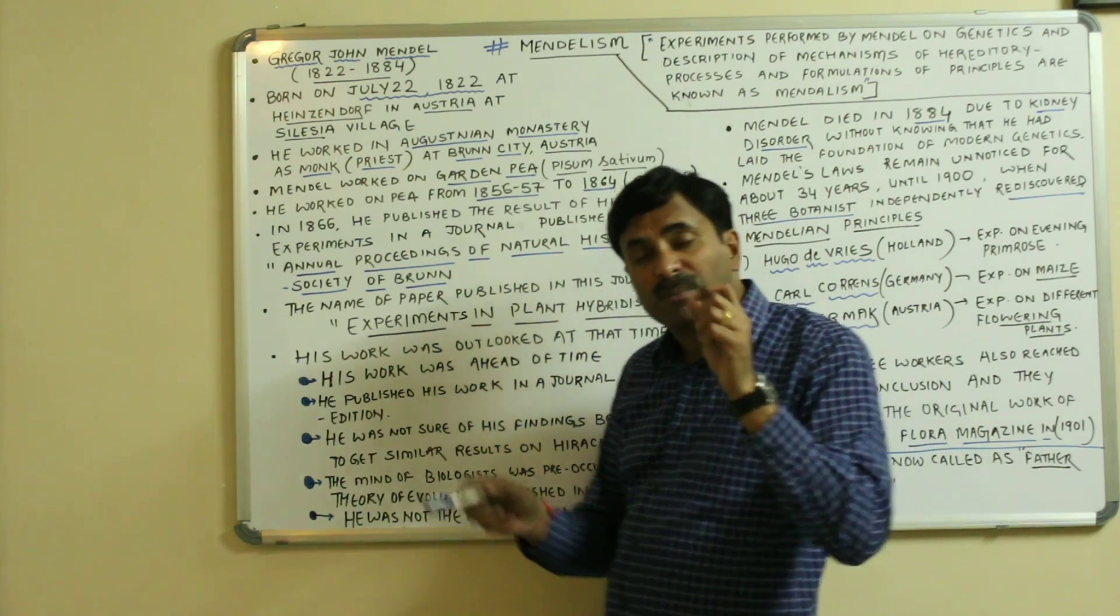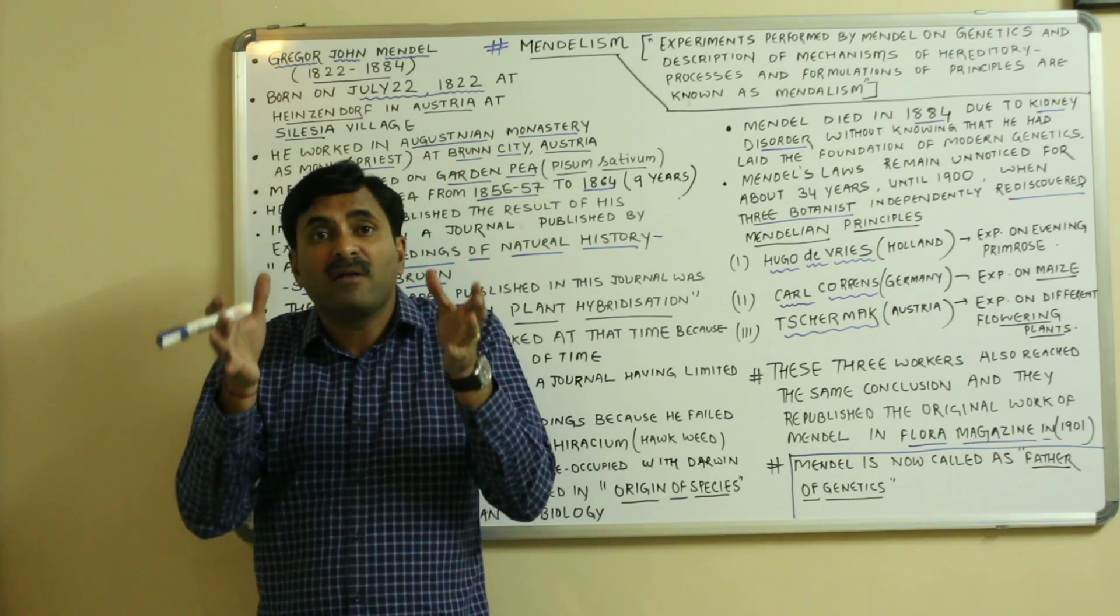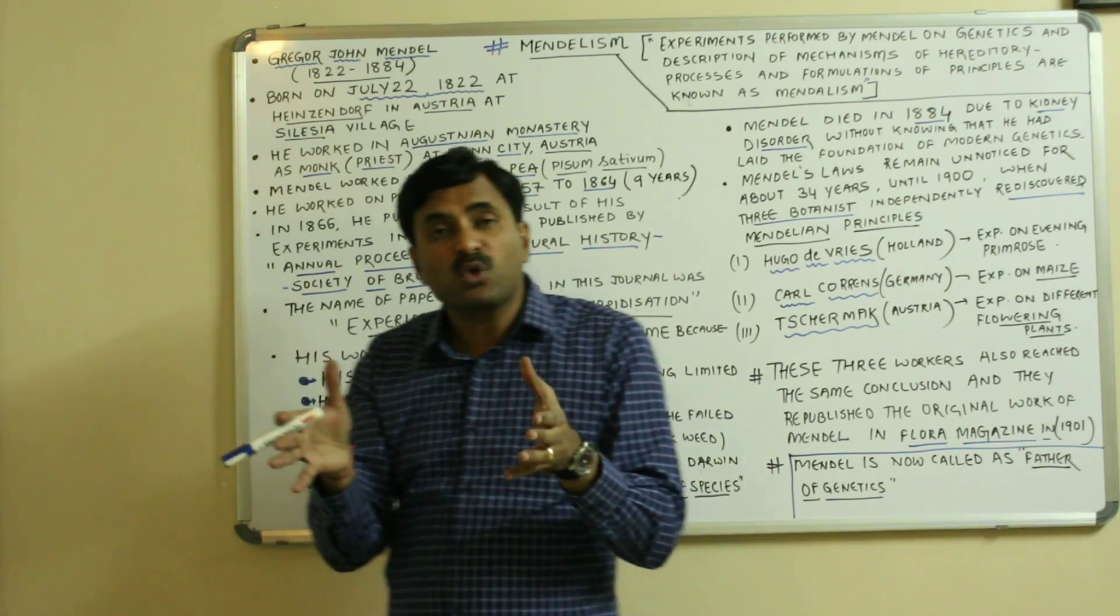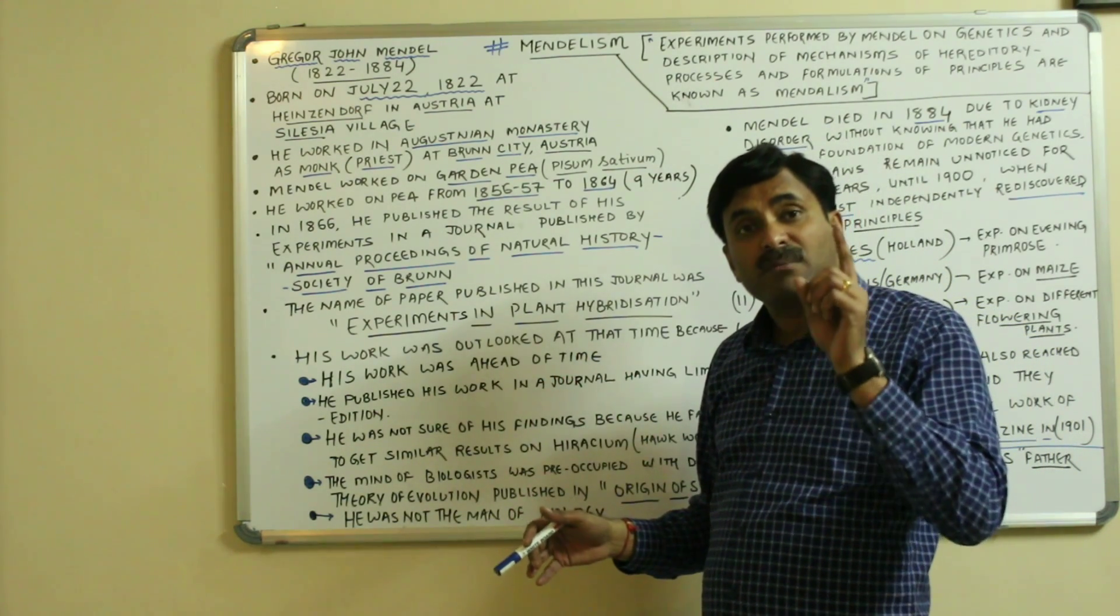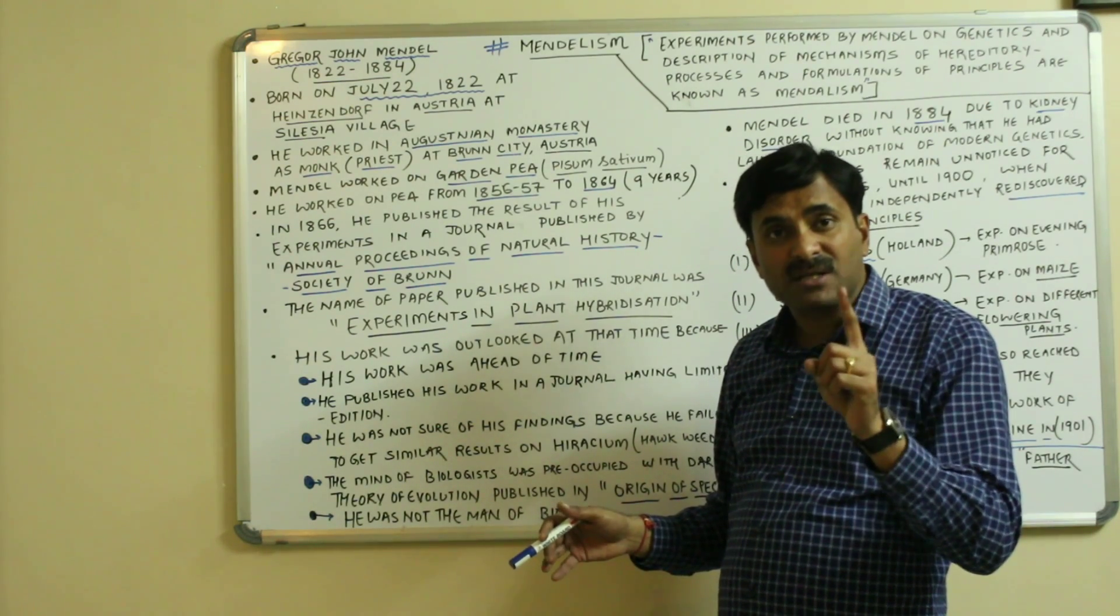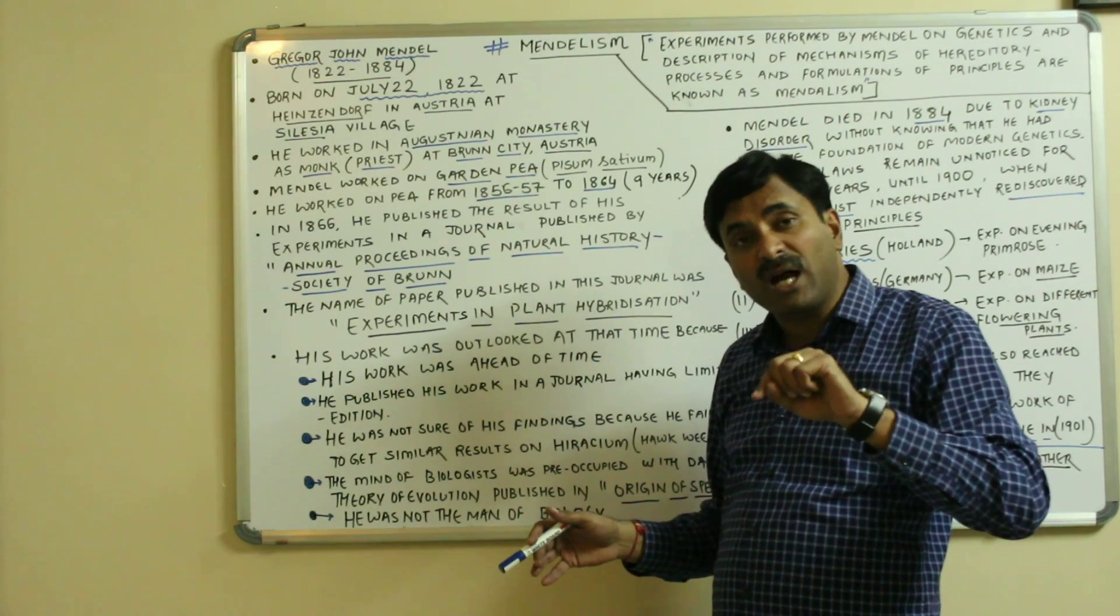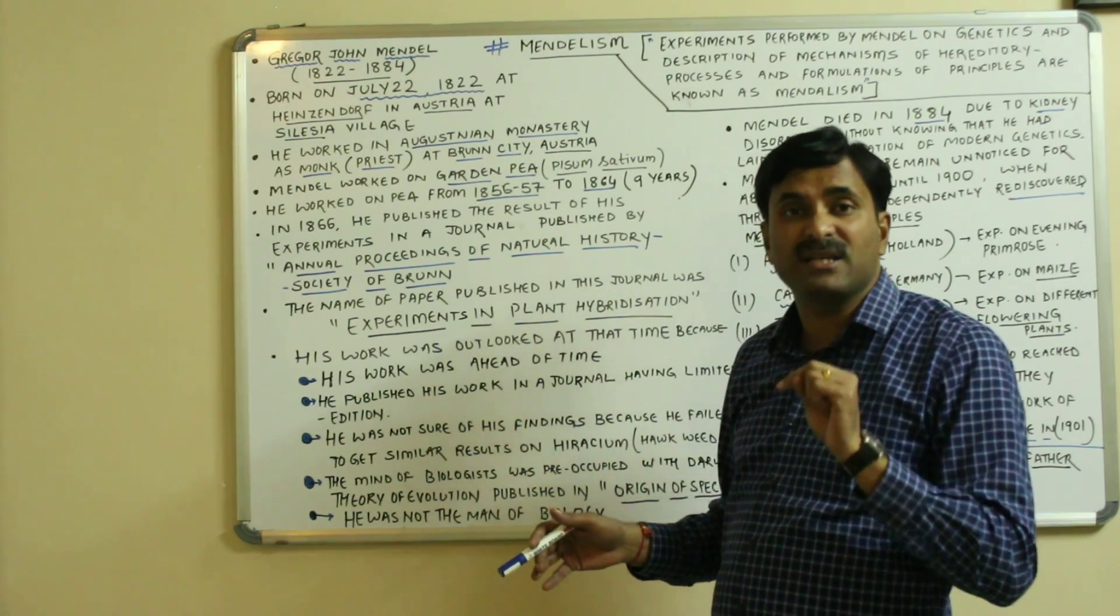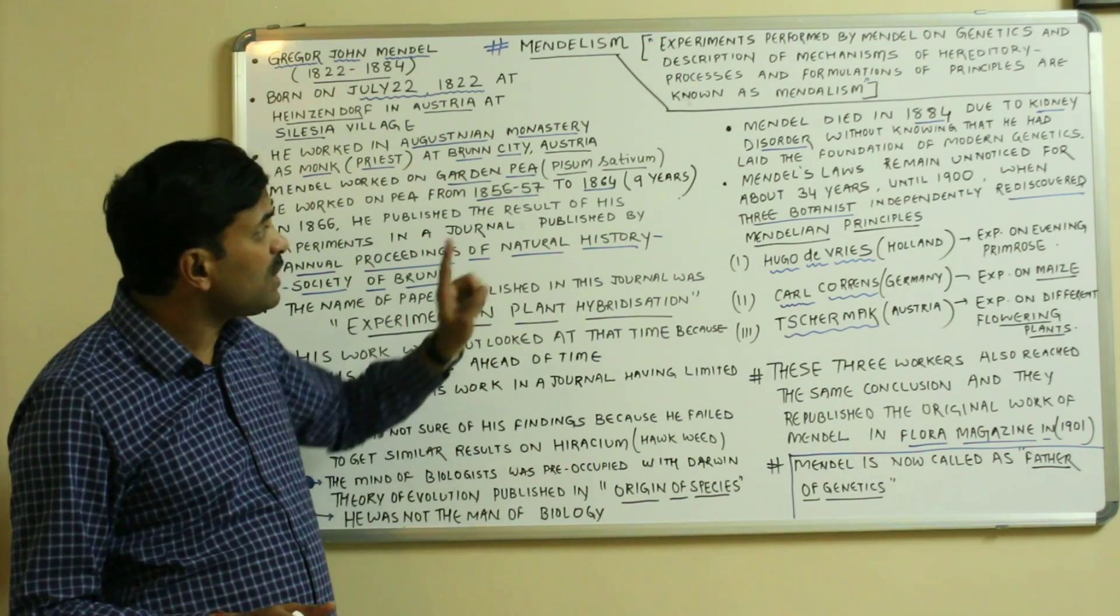All the scientists' minds were preoccupied in viewing the concepts actually given by Darwin for evolution, so nobody has considered the work of Mendel at that time. One more reason was that Mendel was not the man of biology. He has done a diploma in mathematics. He was the man of mathematics, but he was actually talking about biology, so nobody has taken it as serious work at that time. This was the reason that his work was overlooked.